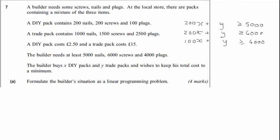Now for trade packs: Y is the number of trade packs. Each trade pack contains 1000 nails, 1500 screws, and 2500 plugs. So the total number of nails is 200X plus 1000Y — that's the nails in DIY packs plus the nails in trade packs — and that total must be greater than or equal to 5000. You need X and Y to be big enough for that to work. The same logic applies to the screws and plugs constraints.